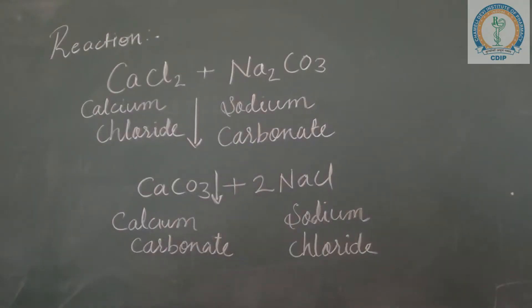So for the preparation of calcium carbonate, the reaction involved is here. That is, we have to take calcium chloride CaCl2 plus Na2CO3, that is sodium carbonate. It will give the precipitates of calcium carbonate CaCO3 and sodium chloride. So this is the basis of preparation of calcium carbonate.